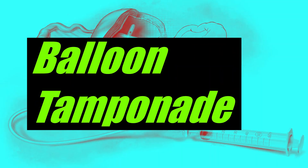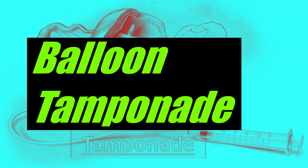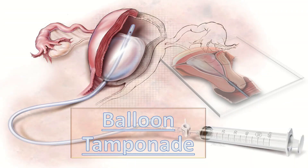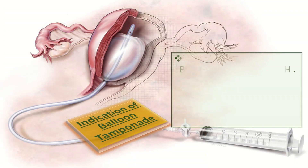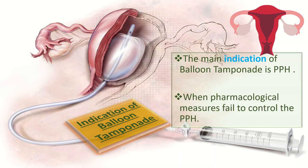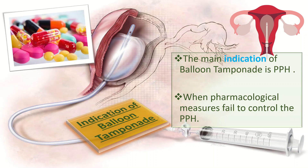Bismillahirrahmanirrahim. Today we will talk about balloon tamponade, starting with its indications. The main indication of balloon tamponade is postpartum hemorrhage. When pharmacological measures fail to control PPH, then comes the role of balloon tamponade, as recommended by the RCOG guideline on PPH.